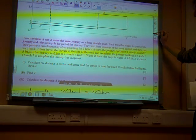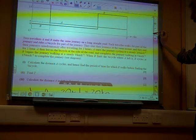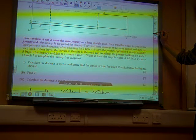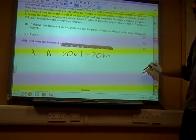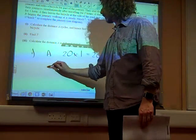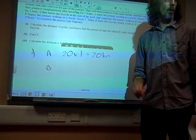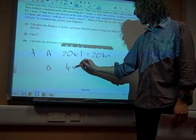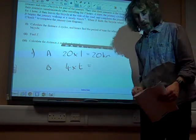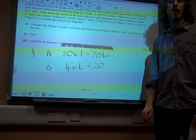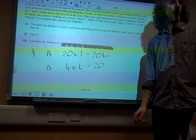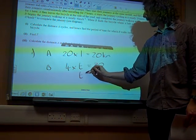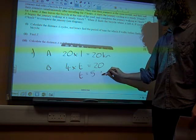And then we're told that B walks for T hours at 4 kilometres an hour. So for person B, they've walked 4 kilometres an hour for T hours, and they also have travelled 20 kilometres in doing that. So if 4 times T is 20, T must be 5 hours.